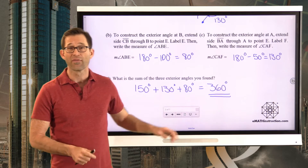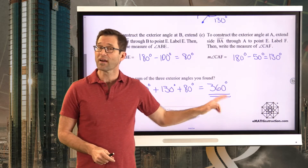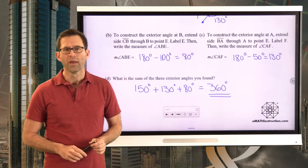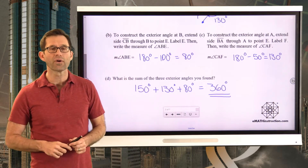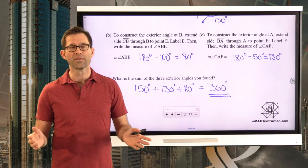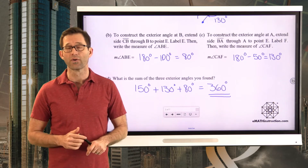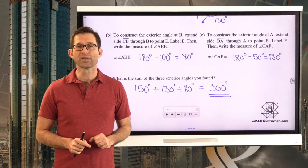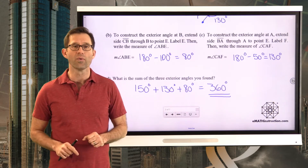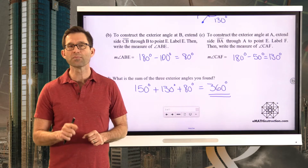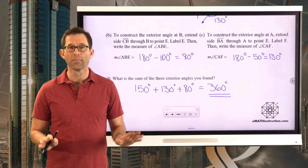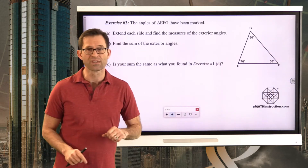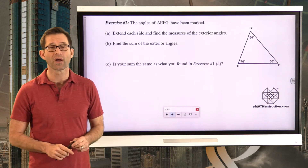360 is a nice number — it's twice 180. And we know that the sum of all the angles in a triangle is 180. Maybe that 360 has something to do with that. Let's play around with this a little bit more and take a look at another exercise that involves exterior angles.